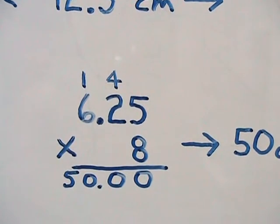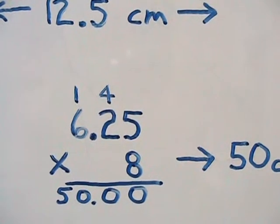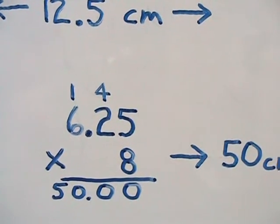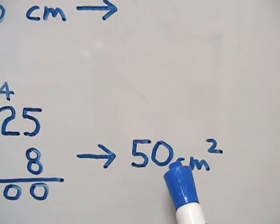Now we don't need to keep the two zeros to the right of the decimal. And we always express area in square units. So our final answer will be 50 square centimeters.